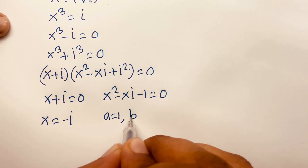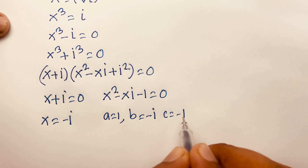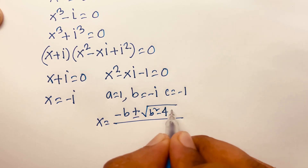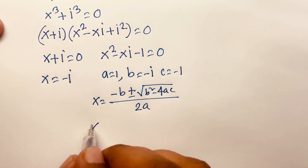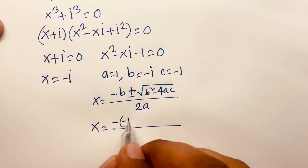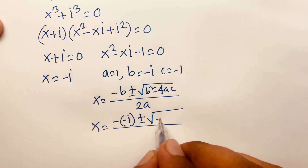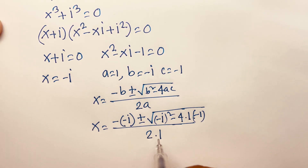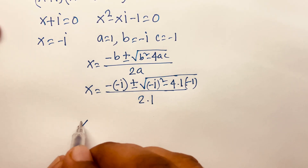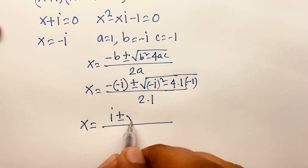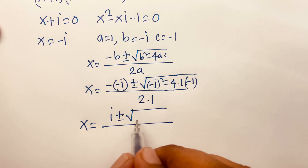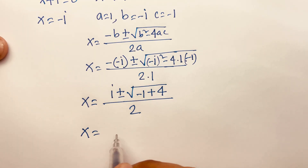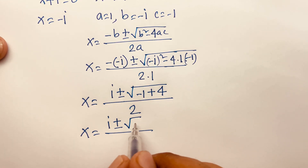For the quadratic, a equals 1, b equals minus i, and c equals minus 1. Applying the quadratic formula x equals minus b plus or minus square root of (b squared minus 4ac) over 2a. Substituting: x equals minus(minus i) plus or minus square root of (minus i squared minus 4 times 1 times minus 1) over 2. Since i squared equals minus 1, we get minus 1 plus 4 equals 3 under the root.